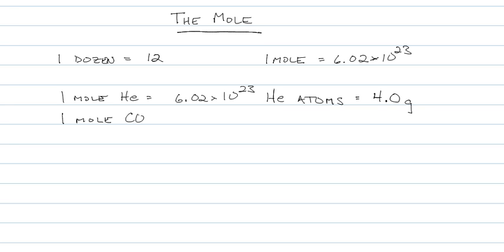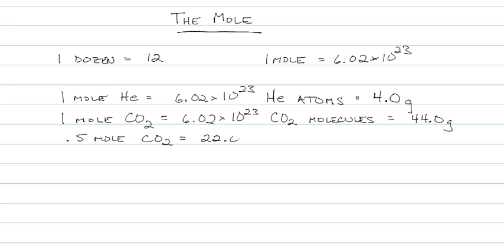One mole of CO2, one mole of anything, has 6.02 times 10 to the 23rd particles. In this case, CO2 is a compound, and since it's two nonmetals, they are called molecules. A mole of carbon dioxide will weigh, look in the periodic table, carbon weighs 12, oxygen is 16, but there's two of them. So 32 plus 12 is 44.0 grams. If I have half a mole of carbon dioxide, it will weigh 22.0 grams. And if I have two moles of carbon dioxide, it will weigh twice the 44, or 88.0 grams.